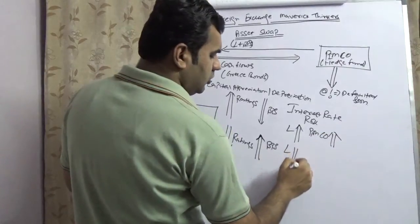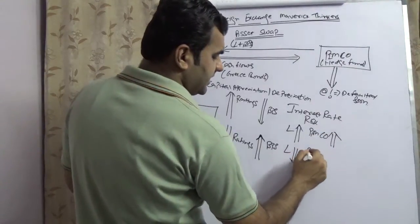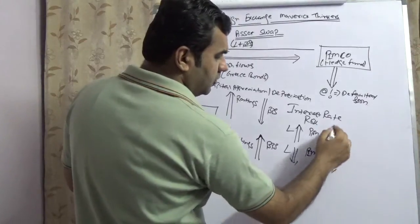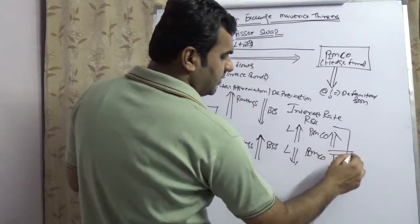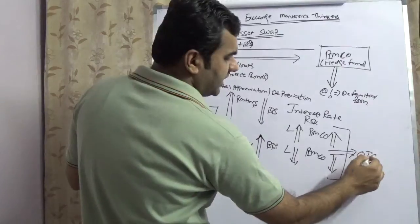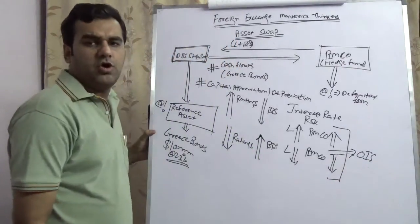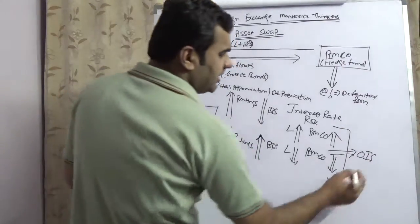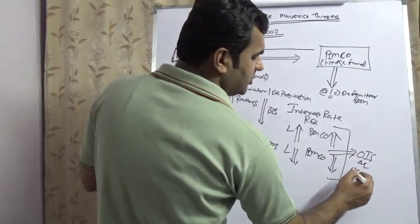If LIBOR would shoot up, PIMCO's interest rate would shoot up. If LIBOR would go down, PIMCO's interest rate would go down. To hedge this interest rate, PIMCO can go into a market known as OIS, or if not OIS, then if it is a cross-country deal, this is USD IRS.